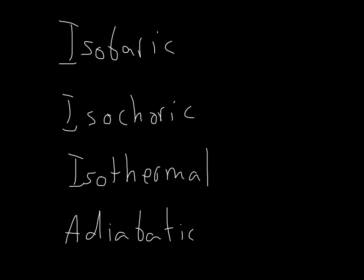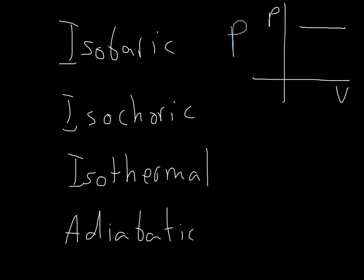Now for some jargon — the names are a little weird and easy to forget. Isobaric means a process where P is constant. Any process where pressure stays constant is an isobaric process; these are very nice because it's easy to calculate the area under them. Then we have an isochoric process, which means that volume is constant. In a PV diagram, the area for an isochoric process is really easy to calculate because it's zero — the base is zero.